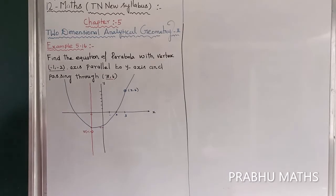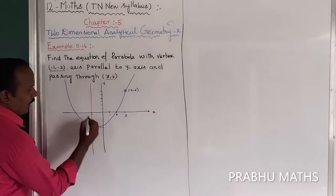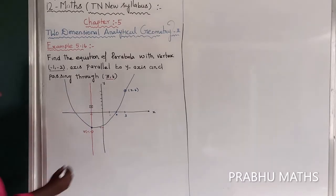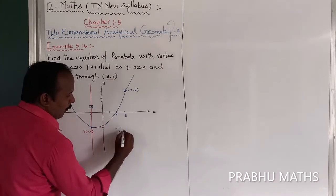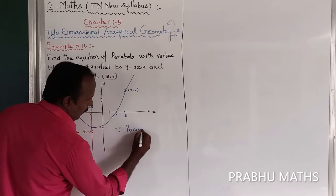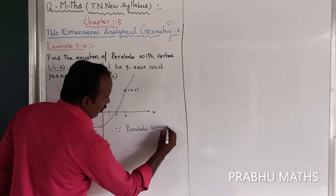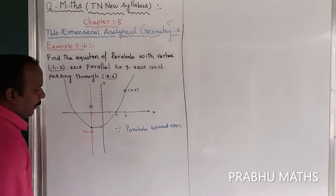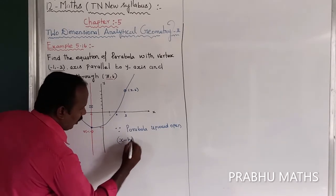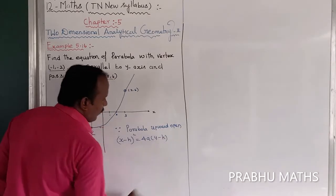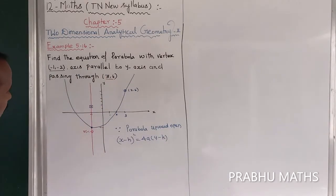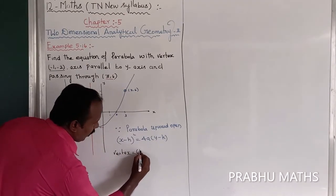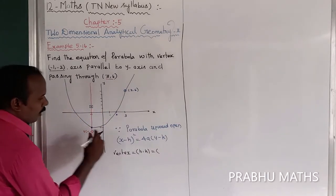This is an upward open parabola. The general form of the upward open parabola is: (x - h)² = 4a(y - k). First, find h and k. The vertex is given directly. Vertex = (h, k) = (-1, -2).